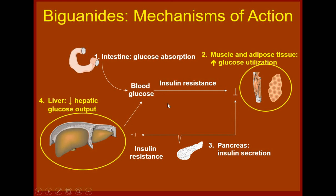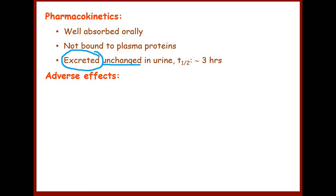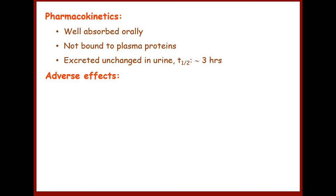Regarding pharmacokinetics of biguanides: these are well absorbed orally, and they are not bound to plasma proteins, so drug interactions related to plasma protein displacement will not be a clinically important concern. There is no metabolism of metformin — it is excreted unchanged in the urine. This means that if a patient has renal insufficiency or a kidney-related problem, metformin is contraindicated. The biological half-life of metformin is approximately three hours.